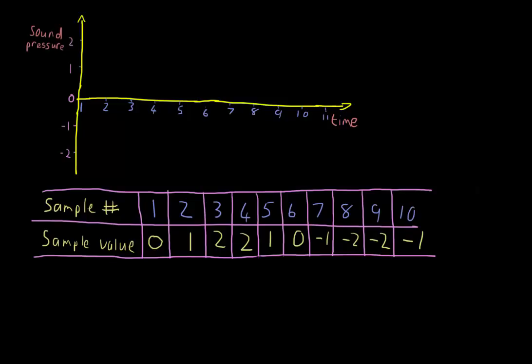But before I talk about Nyquist, I'd like to take another few minutes to talk a bit more about some ideas surrounding sampling. So down here, I have a table with 10 sample numbers and 10 corresponding sample values. You might think that with this information, we can reconstruct this signal, but there's one thing missing.